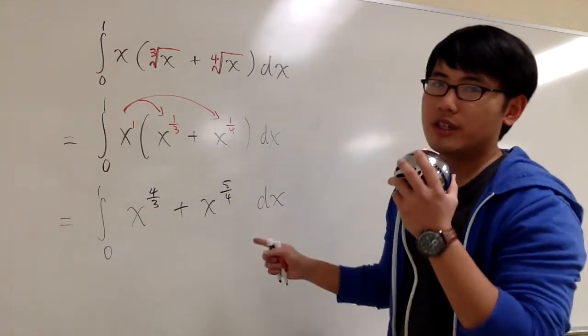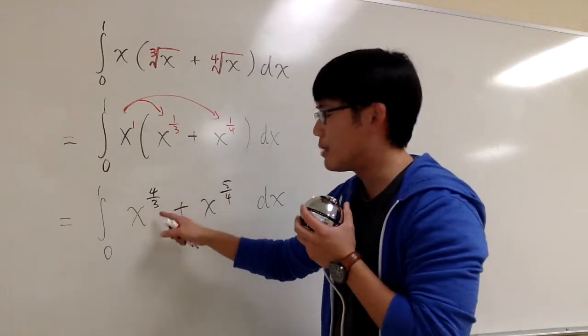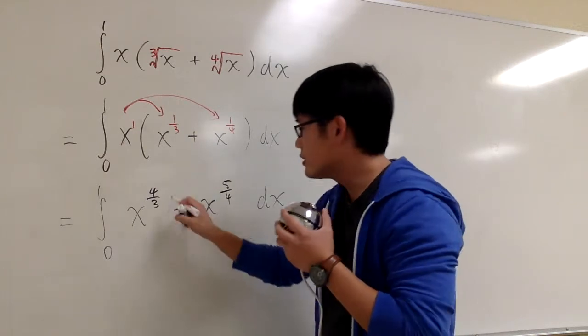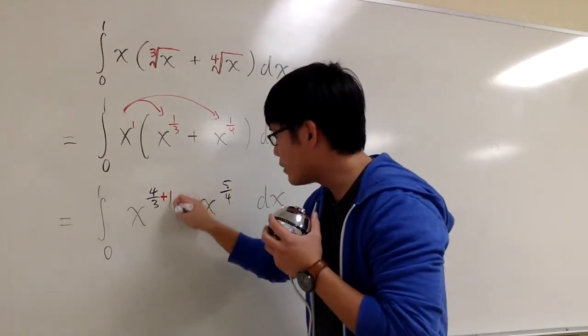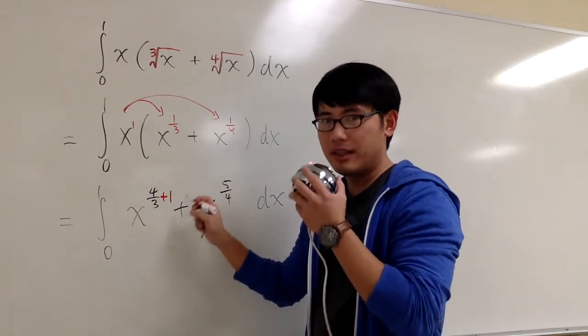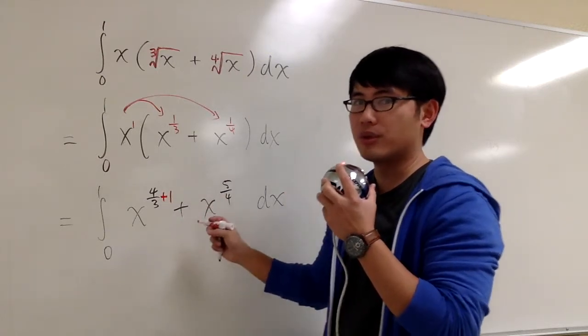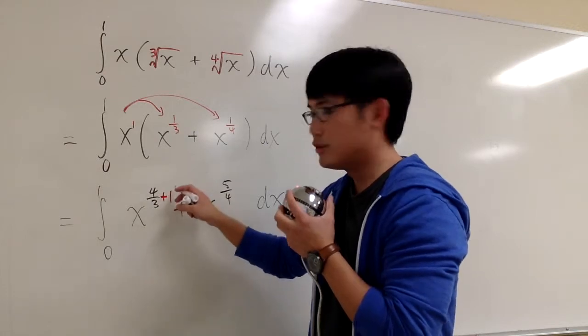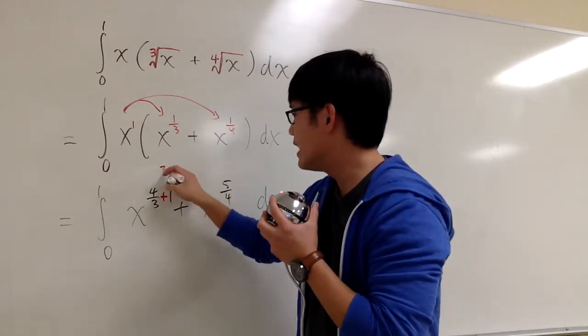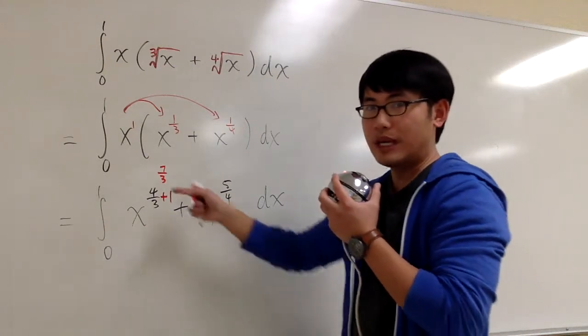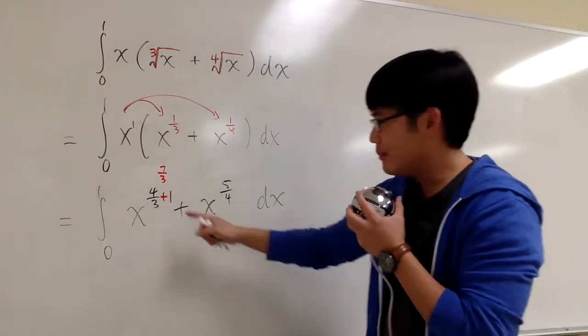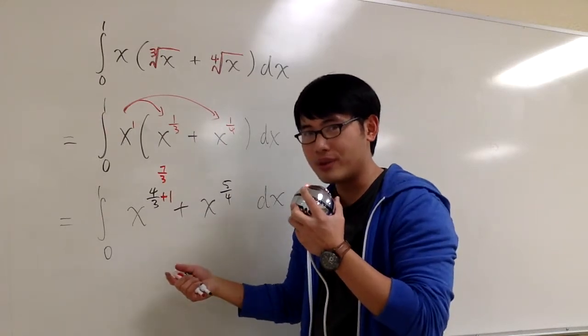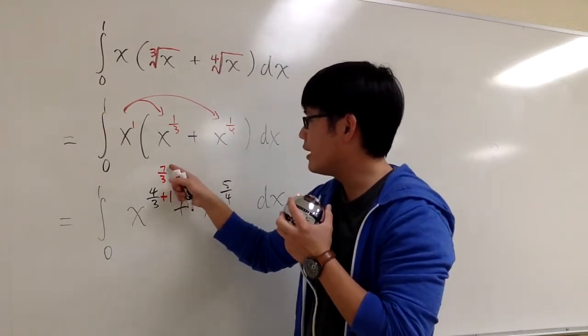We can do the reverse power rule now. This is x to the fourth third power. There's nothing else going to affect the exponent. So now I will just add 1 right here. This plus 1 is because of the backward power rule, the reverse power rule. So 4 thirds plus 1, this gives us 7 over 3. And that's why I raised the little numbers earlier, because I add 1. We are doing the reverse power rule. The new exponent will be 7 thirds.